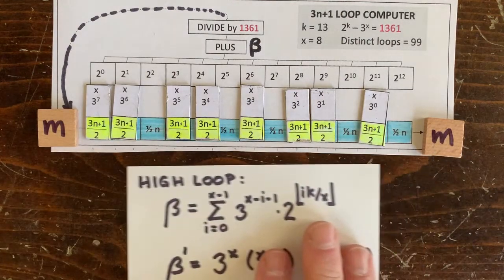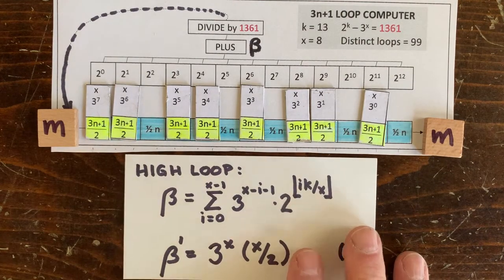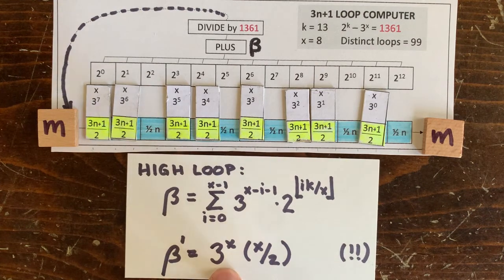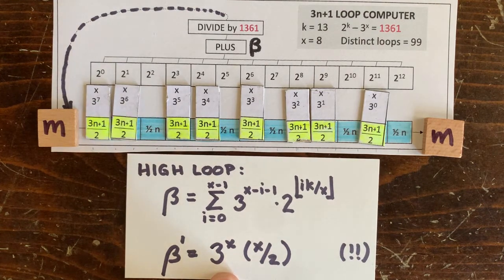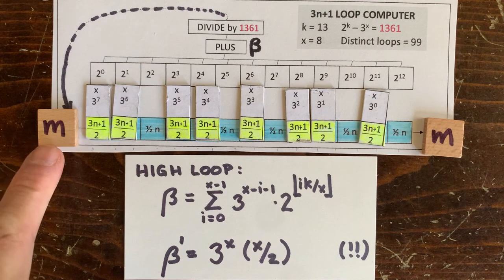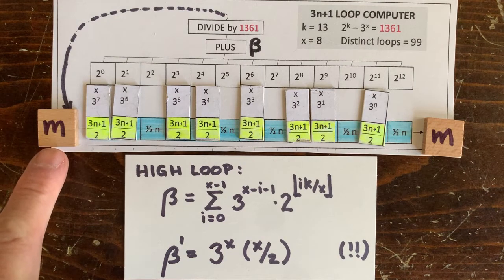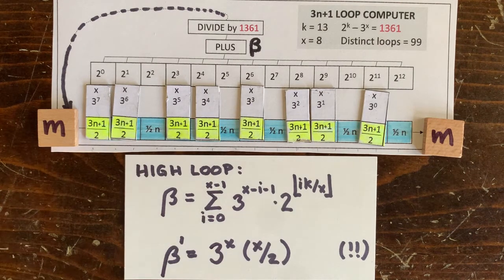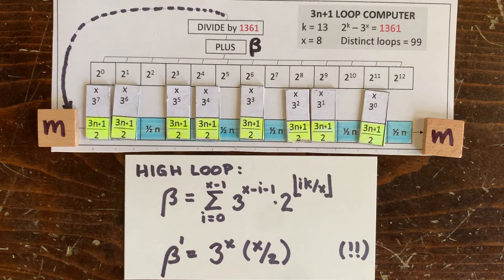So beta prime here increases exponentially. That means we're going to reach a loop length x where m exceeds a billion billion, and we'll have the possibility of an integer loop. So can we solve for x?